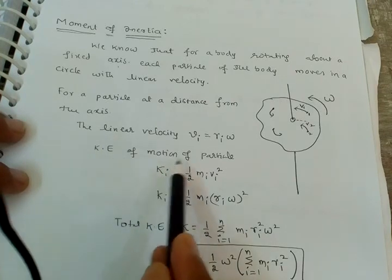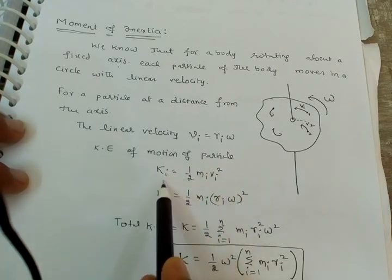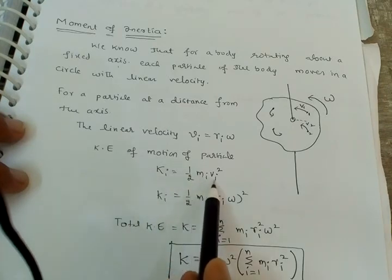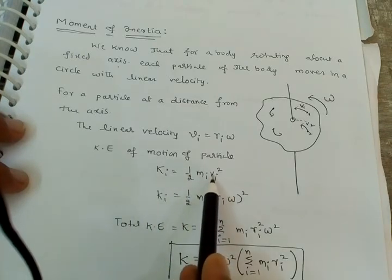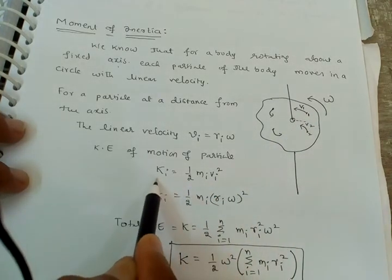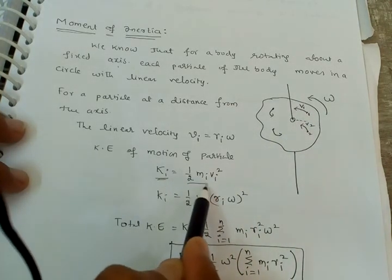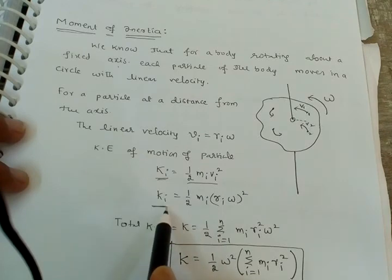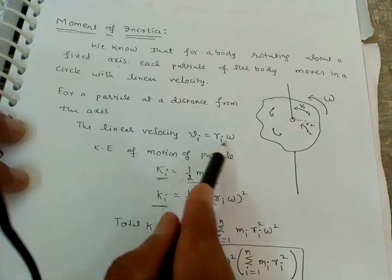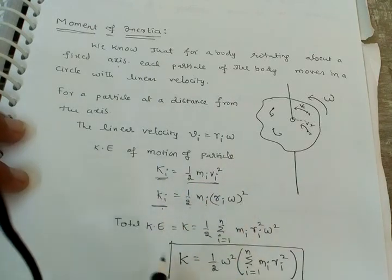The kinetic energy of the ith particle is equal to half m_i v_i squared, where v_i is the linear velocity of the ith particle. So kinetic energy of the ith particle equals half m_i v_i squared. Substituting v_i equal to r_i omega, the kinetic energy becomes half m_i times (r_i omega) squared.